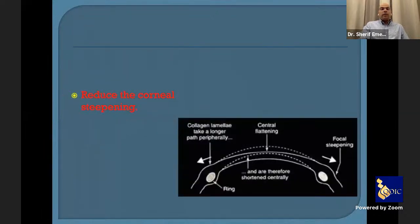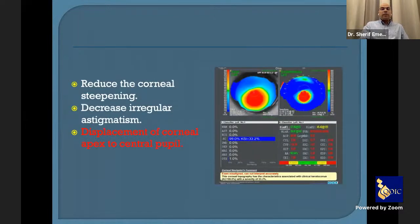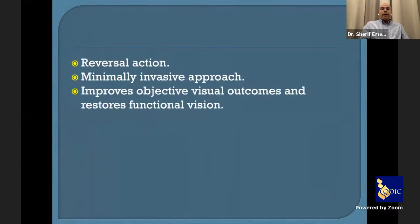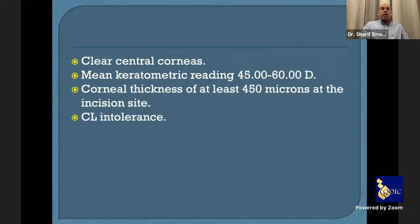The mechanism reduces corneal steepening and decreases irregular astigmatism, and causes displacement of the corneal apex toward the center of the pupil. The advantage of the intracorneal ring is that it's reversible — we can remove it any time. It's a minimally invasive approach that doesn't affect the central cornea and improves objective visual outcomes and restores functional vision.